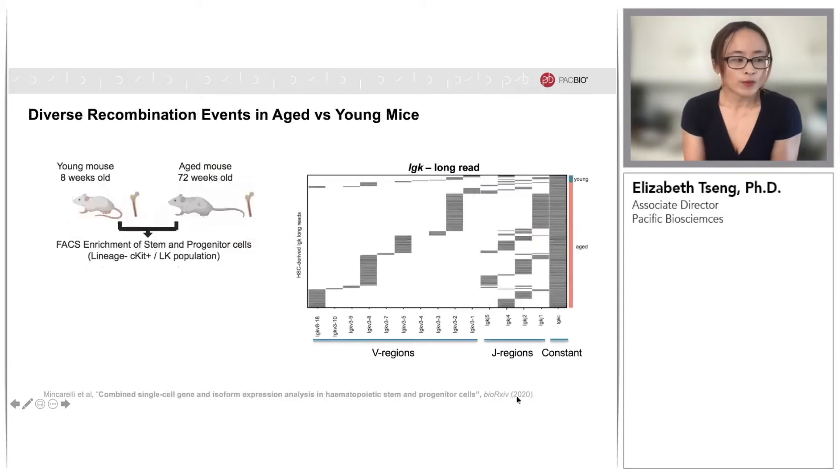In another preprint, the authors use single-cell Iso-Seq to study expression changes in hematopoietic stem cells and progenitor cells in young versus aging mice. They were able to see certain isoforms being enriched in certain subclusters. Not only that, they also found that the immunoglobulin gene IgK, the aging process had led to an increased recombination event.